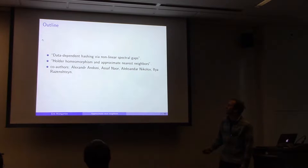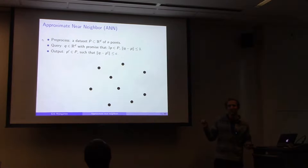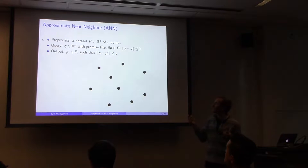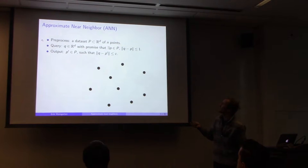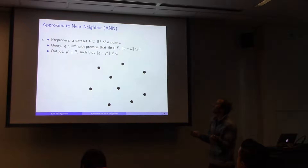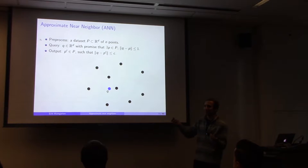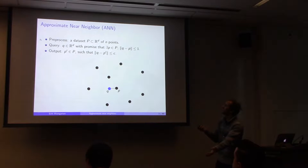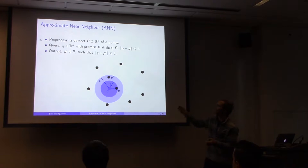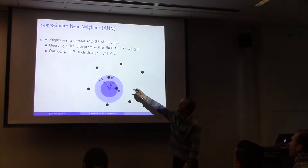Let me first set up the main algorithmic problem: the approximate near-neighbor problem, which is a data structure problem. At the beginning, I'll get some dataset P — n points in R^d, d-dimensional space. I want to arrange these points into a data structure so that when you come with a new query point Q, and there's a promise that there's a point P with distance at most 1, you return any point from the dataset P' with distance at most C, where C is a parameter bigger than 1.